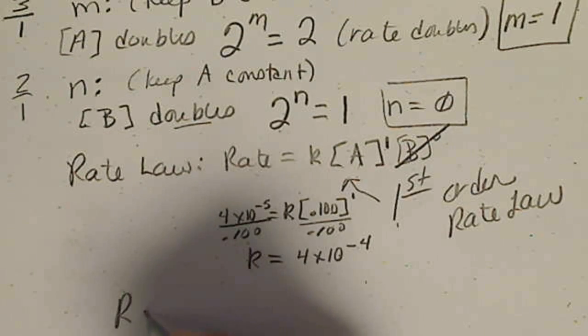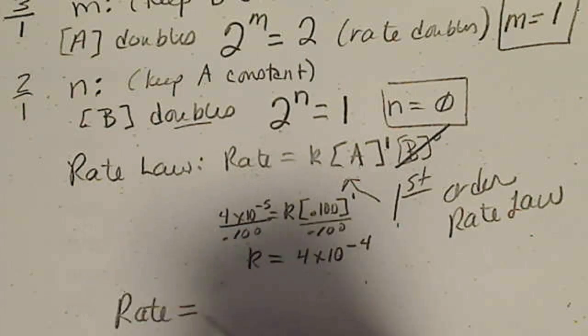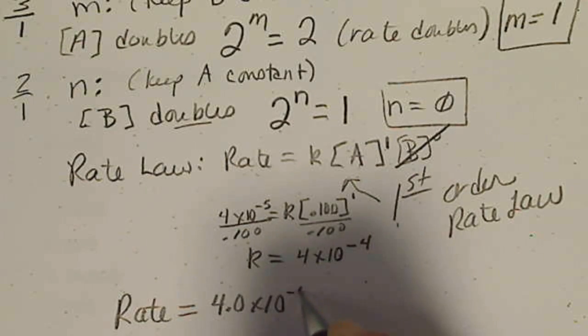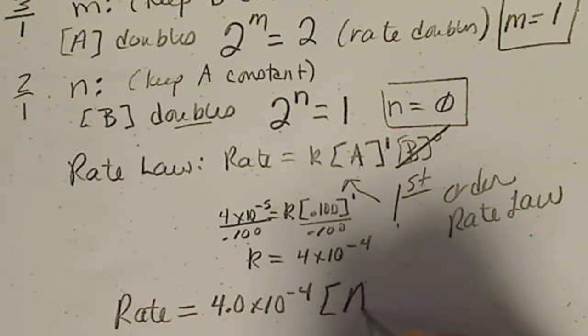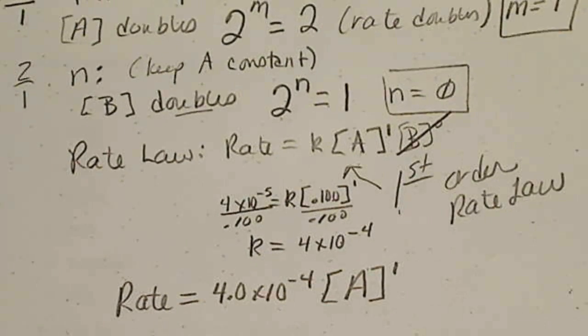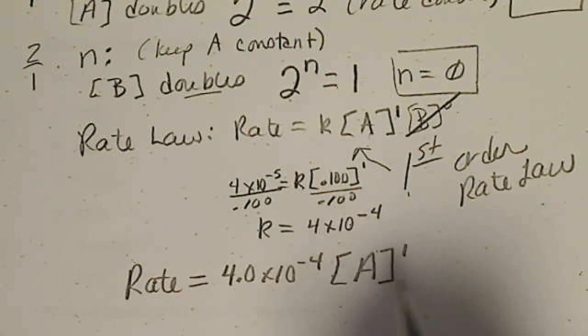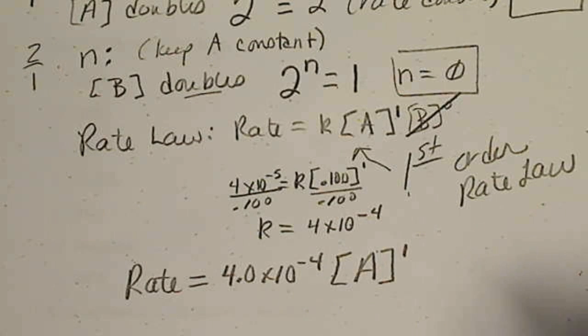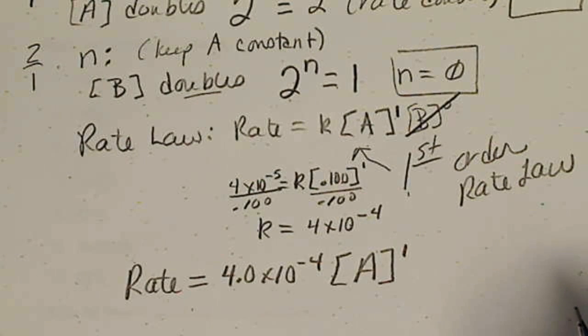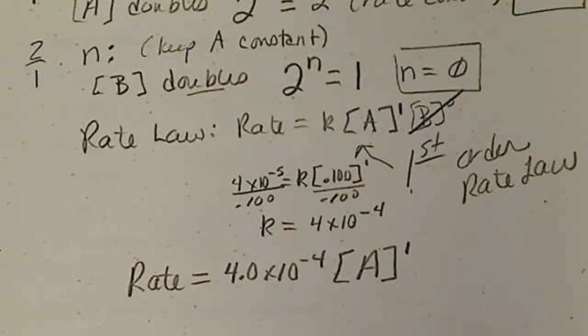So our rate law is this. Rate equals 4.0 times 10 to the minus 4th times A to the first power. Our rate constant is here, and we happen to get a first order rate law.